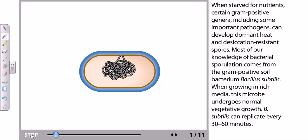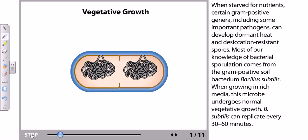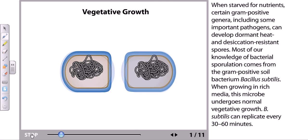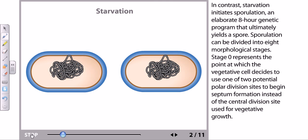When growing in rich media, this microbe undergoes normal vegetative growth and can replicate every 30 to 60 minutes. That is normal vegetative growth of this bacteria, but this bacterium can produce spore. In contrast, starvation inspires sporulation, an elaborate 8-hour genetic program that ultimately yields a spore. Sporulation can be divided into eight morphological stages.